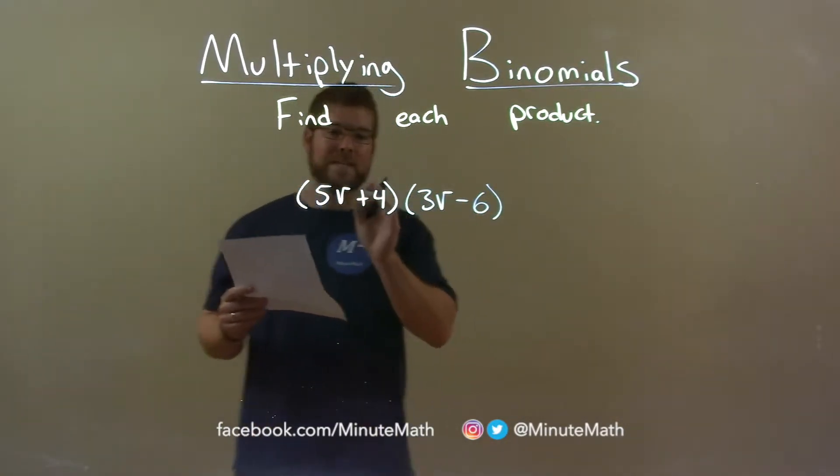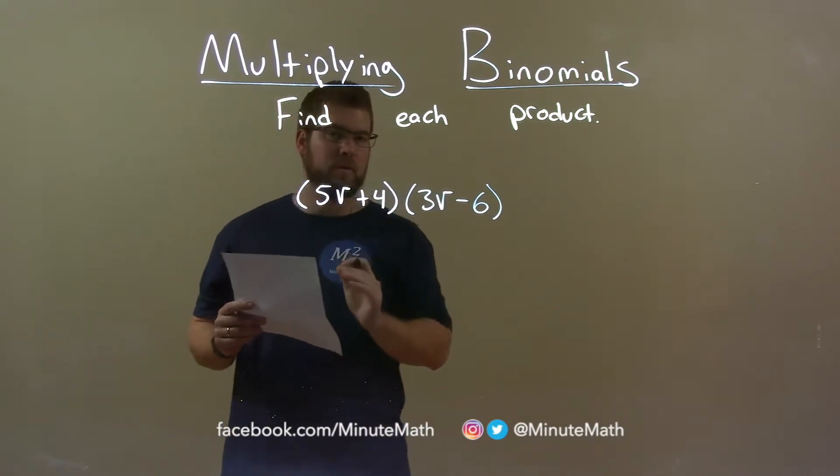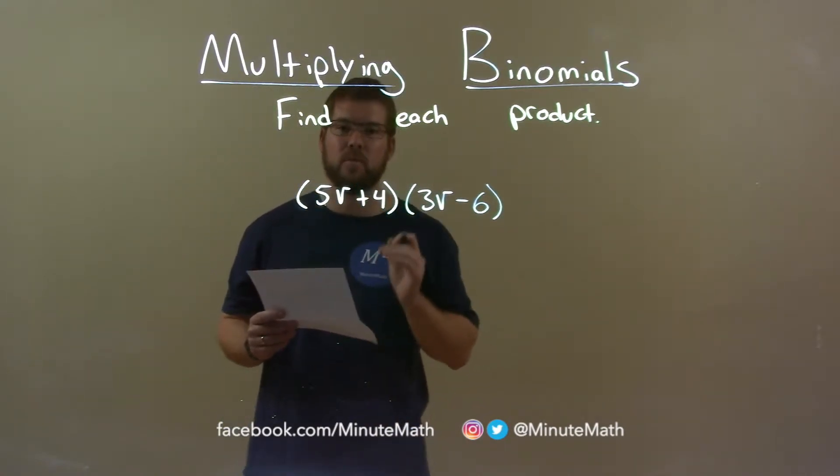Well, we first want to take all parts of our first parenthesis and multiply it by all parts of our second parenthesis.